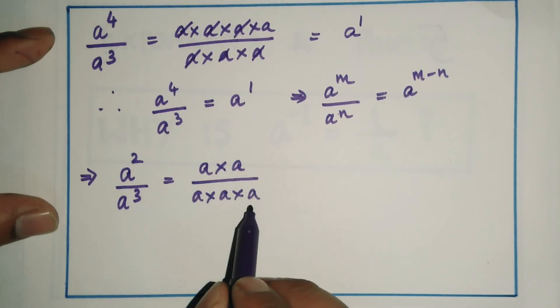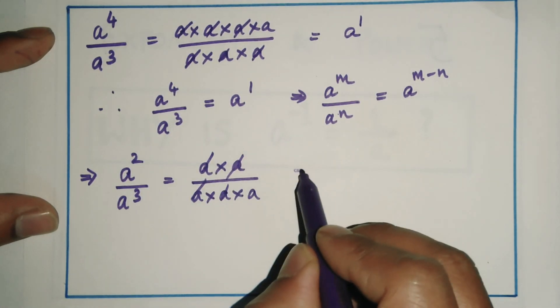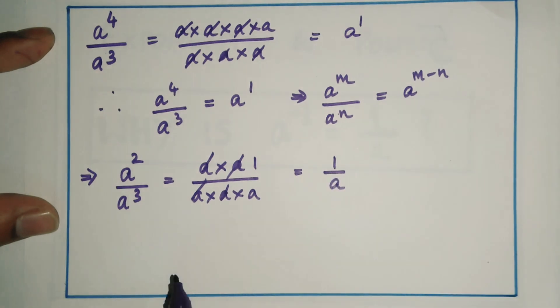Here, I find more a's in the denominator than in the numerator. On cancellation, I get one a in the denominator.